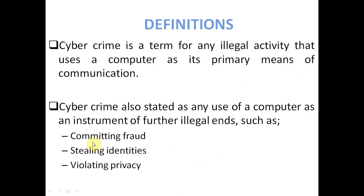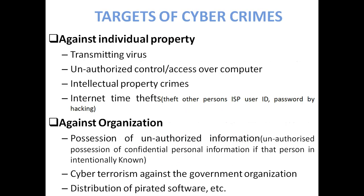The different types of cybercrime or illegal activities include committing fraud, stealing identities, and violating privacy. Cybercrime is also stated as any usage of a computer as an instrument to further illegal ends, so these illegal ends are committing fraud, stealing identity, and violating privacy. These are the different types of cybercrime.